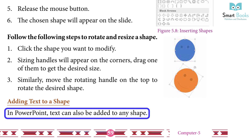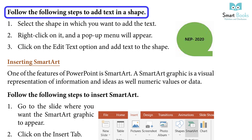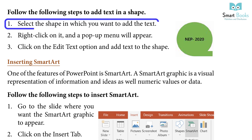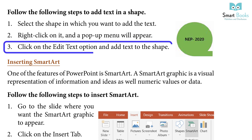In PowerPoint, text can also be added to any shape. To add text in a shape: select the shape in which you want to add the text, right-click on it and a pop-up menu will appear, then click on the Edit Text option and add the text to the shape.